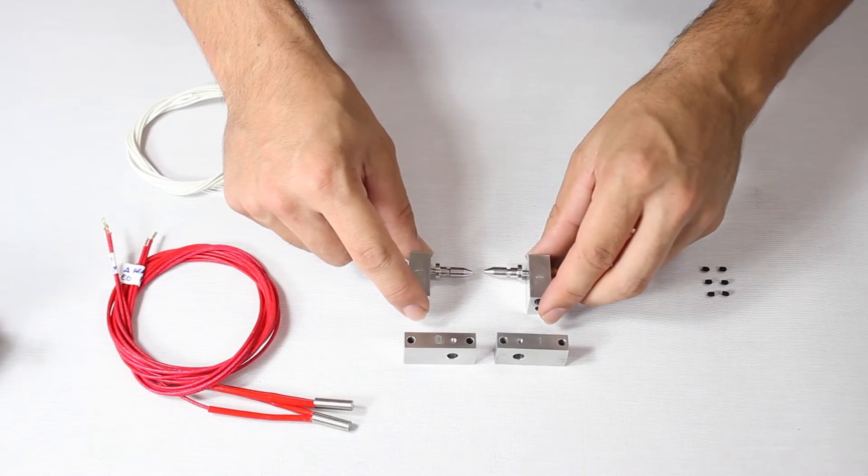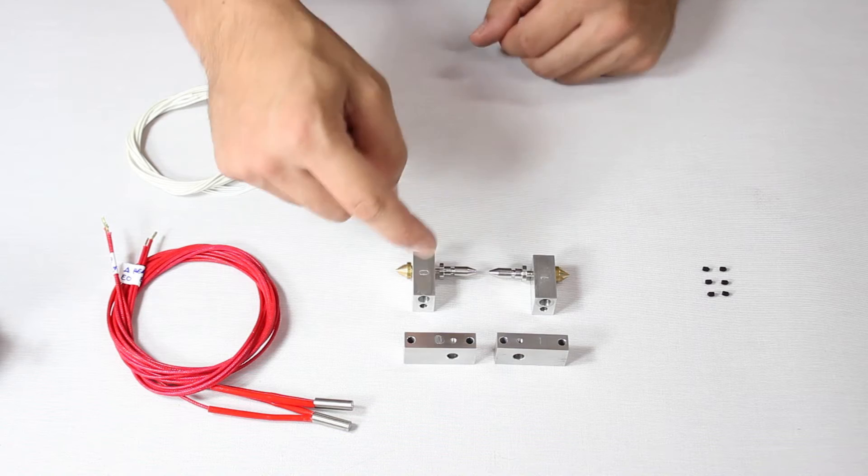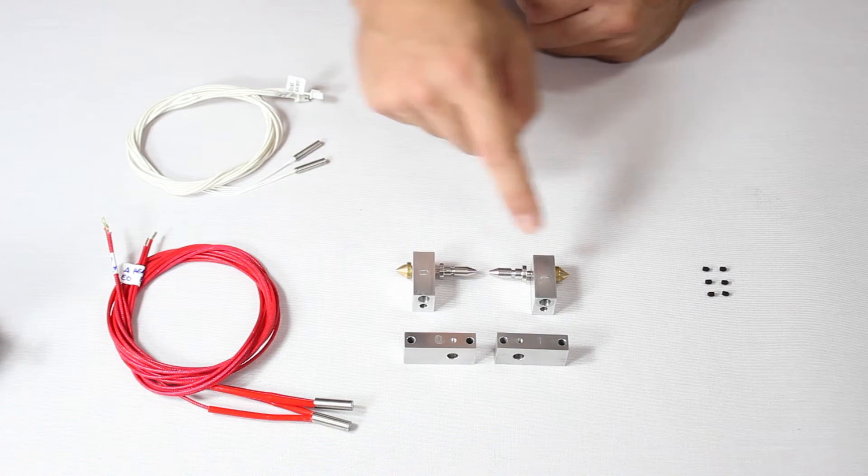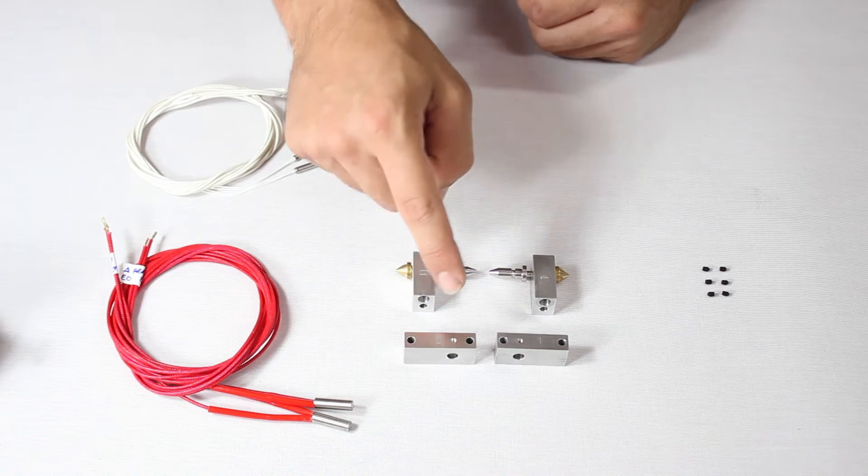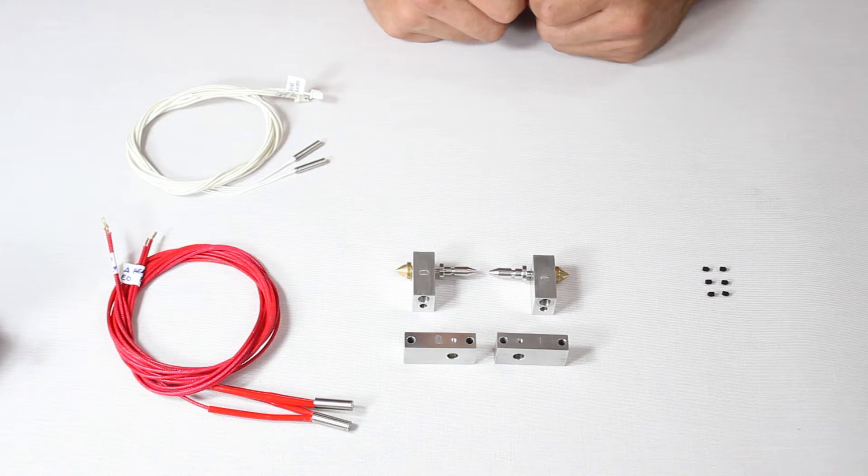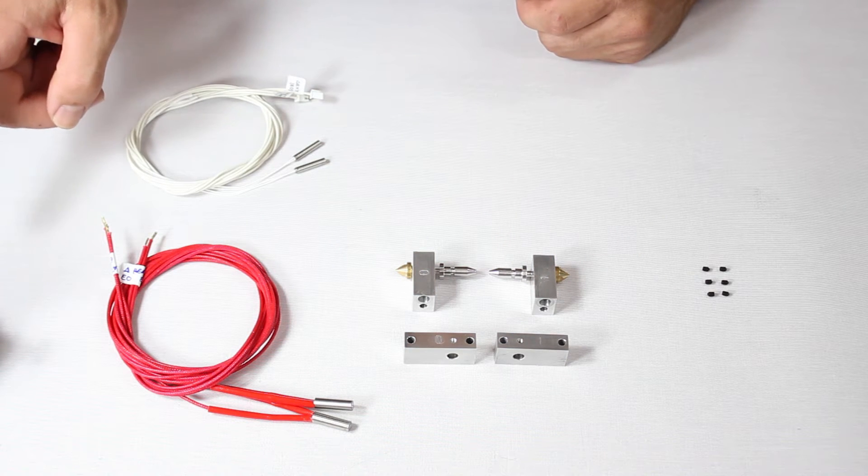And now, we assemble these very important extruder components. Note that every component here has either been branded with a 0 or a 1, or has a label that the user must mark.